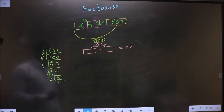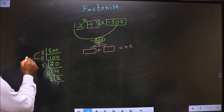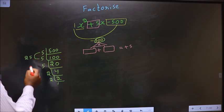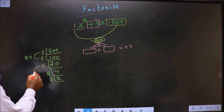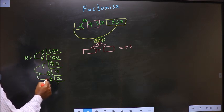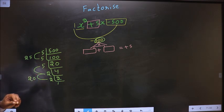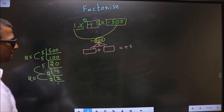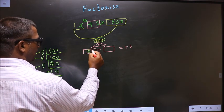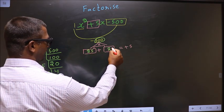So the 2 numbers should be 5 into 5, 25. And the second number is 5 into 2, 10; 10 into 2, 20. 25 minus 20 is 5. 25 into 20 is 500. So here 25 and here 20.